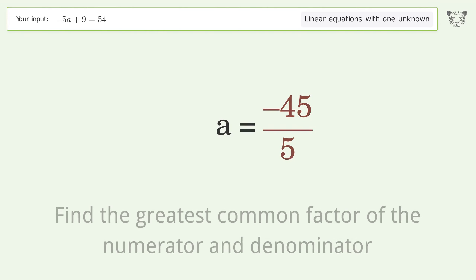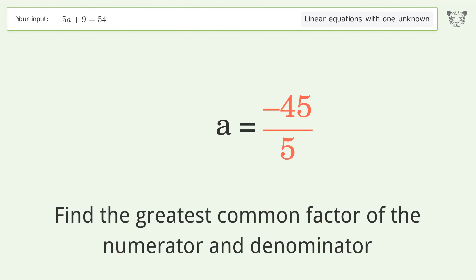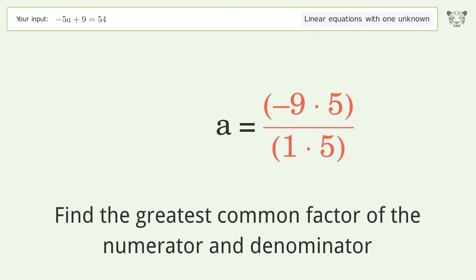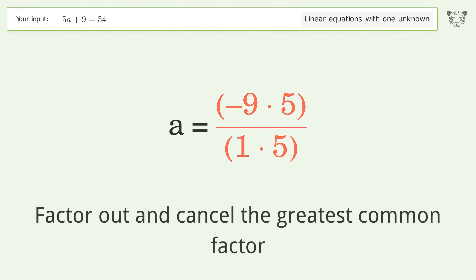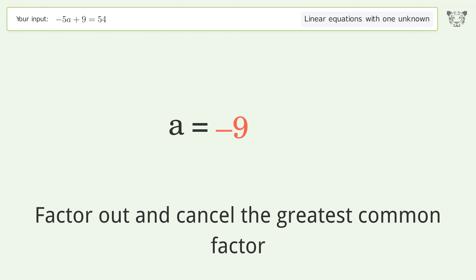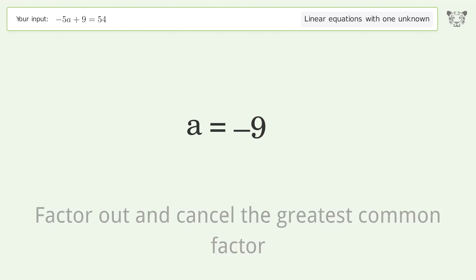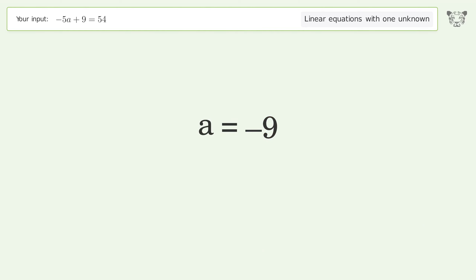Find the greatest common factor of the numerator and denominator, then factor out and cancel the greatest common factor. And so the final result is a equals negative 9.